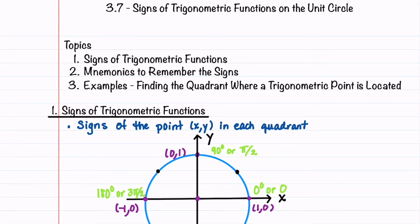Welcome to Understand the Math. In this video, I'll go over a simple way to memorize the signs of trigonometric functions in each quadrant of the unit circle. I'll then work through some example problems where we'll find the quadrant where a trigonometric point is located. Before you begin, check out the description below to find a link to free guided notes that you can download and fill out as you watch this video.